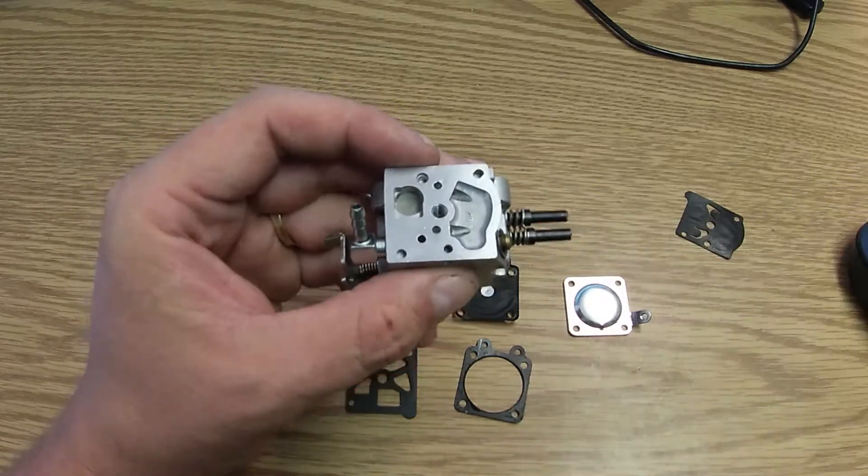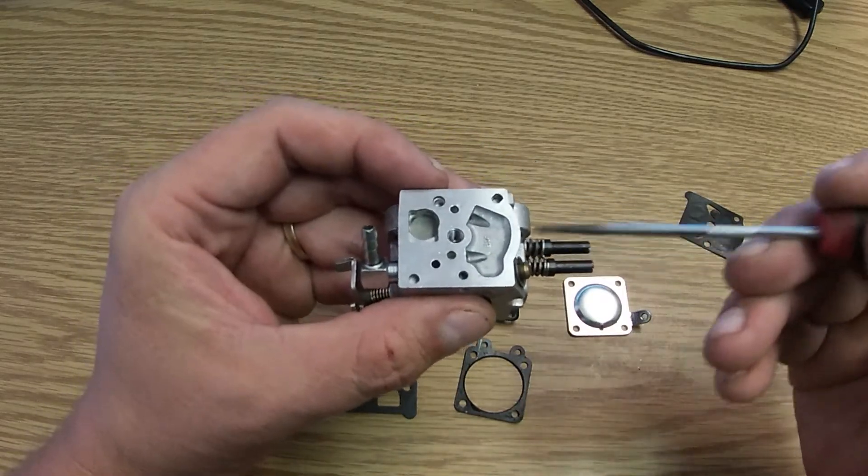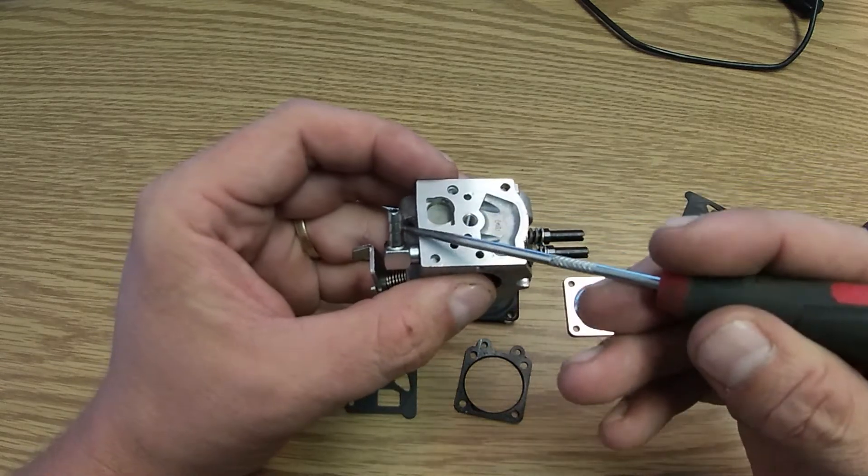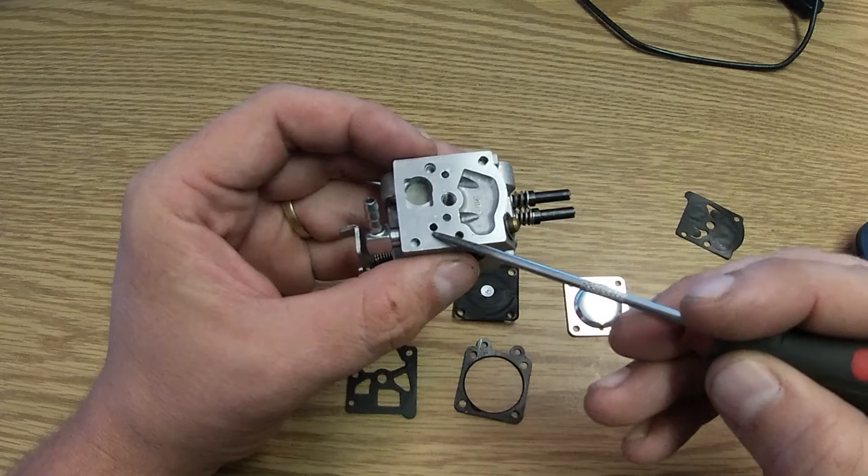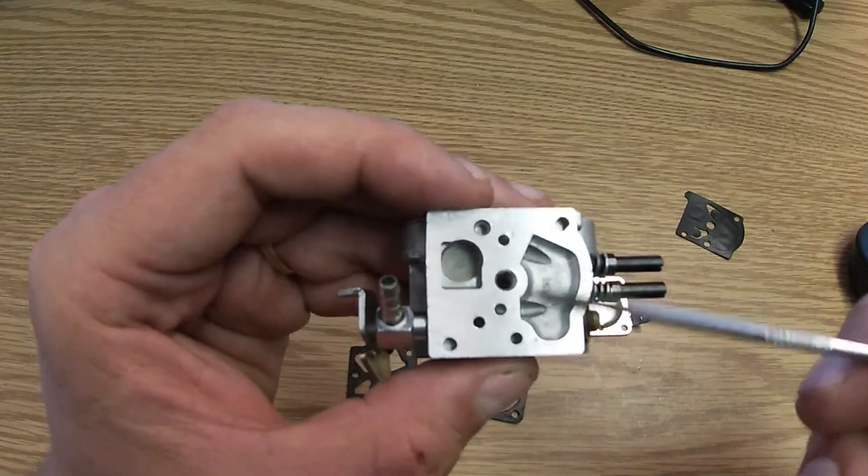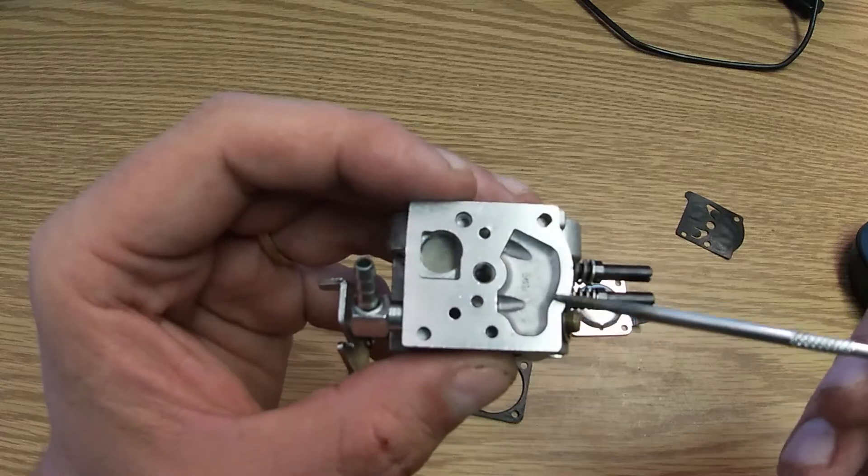So how this works is right here, when the piston goes up, it's going to cause this to go up, sucking gas from here, up into here, through this little hole, down into the fuel reservoir. This is like your carburetor bowl almost.